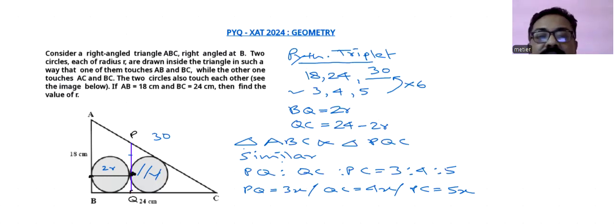Area of triangle PQC will be half into base into height, so it will be coming as half into base QC is 4x and PQ height it will be 3x. And we have another area formula in terms of inradius, that is inradius r into semi-perimeter. So if we go with that, r into semi-perimeter means 3x plus 4x plus 5x by 2.